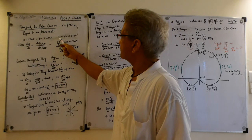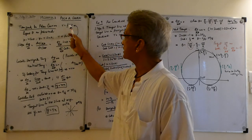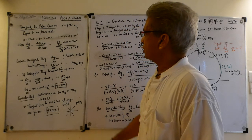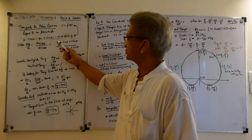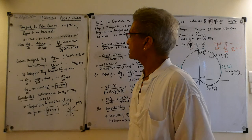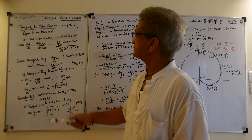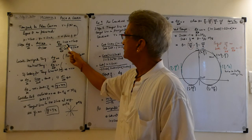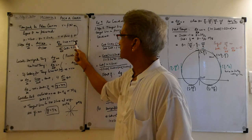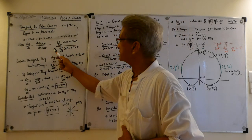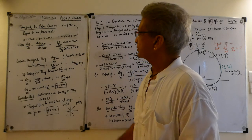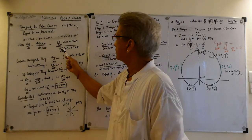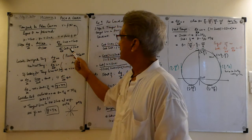Now remember that r is a function of θ — it's not a constant; it is a function of θ. So if you do dy/dθ, you have dr/dθ times sinθ, plus r times cosθ (the differential of sinθ). Similarly, dx/dθ is dr/dθ times cosθ, minus r times sinθ (the differential of cosθ).